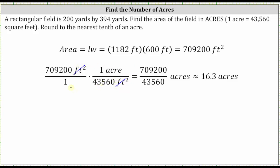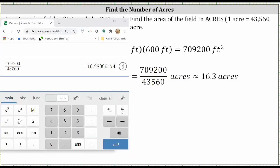Multiplying we have 709,200 divided by 43,560 acres. And now we divide using the calculator. Rounding to the tenths place value as indicated, we have approximately 16.3 acres.